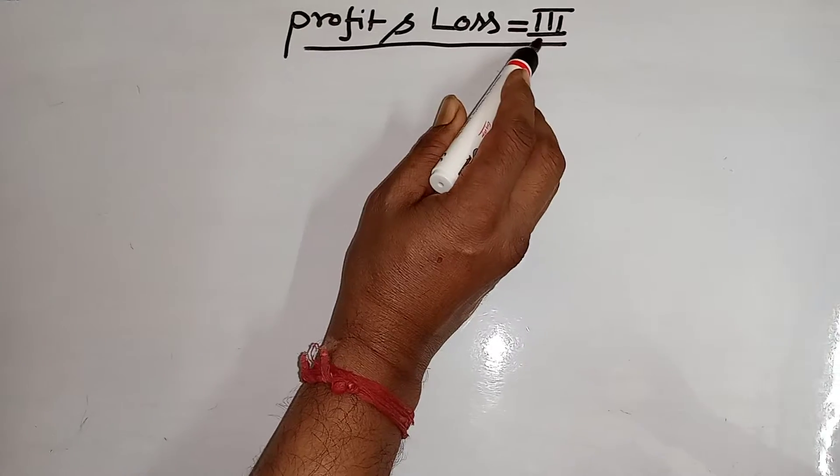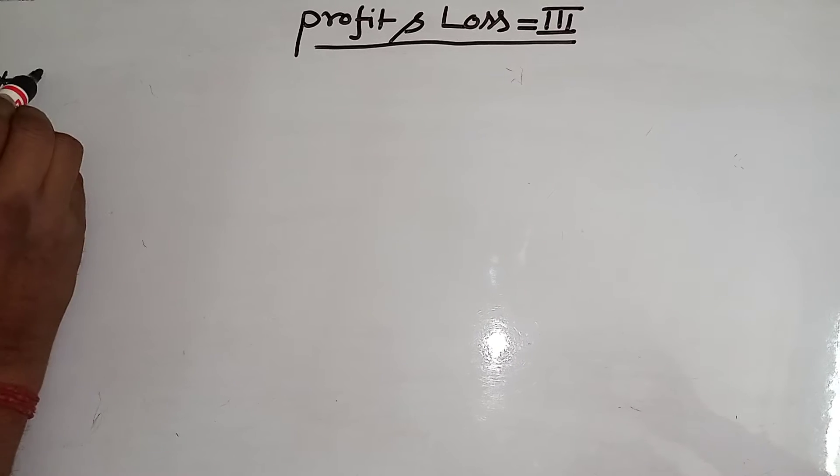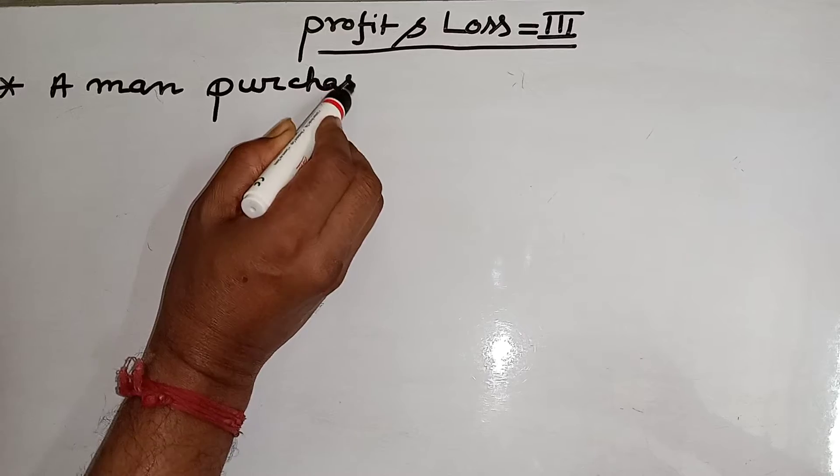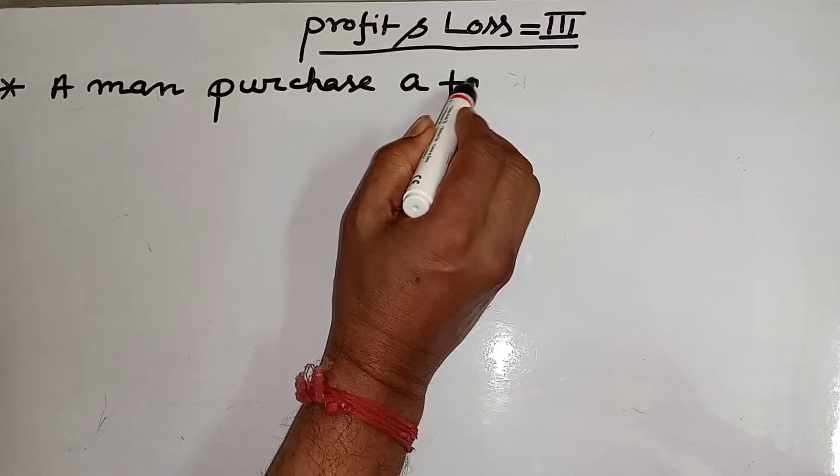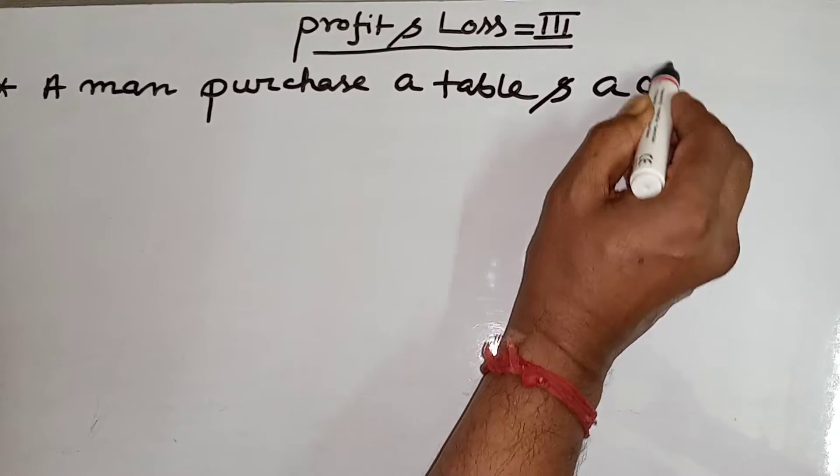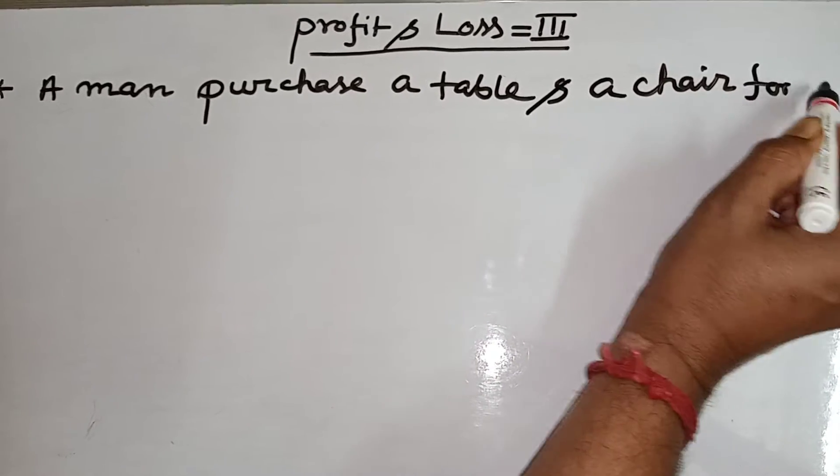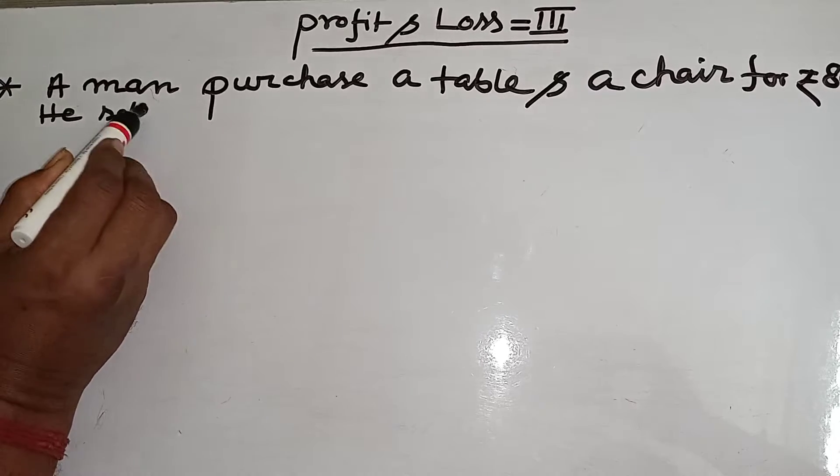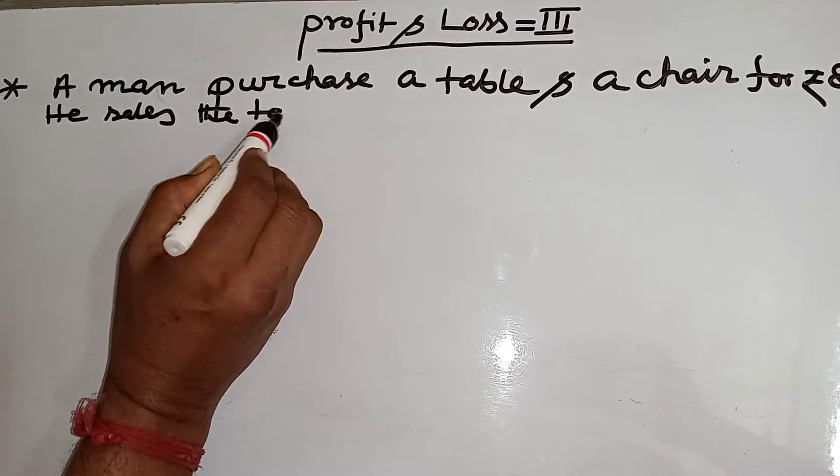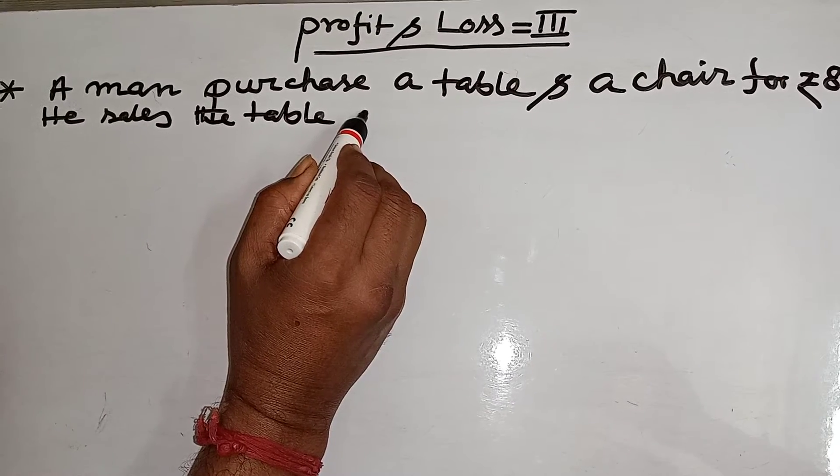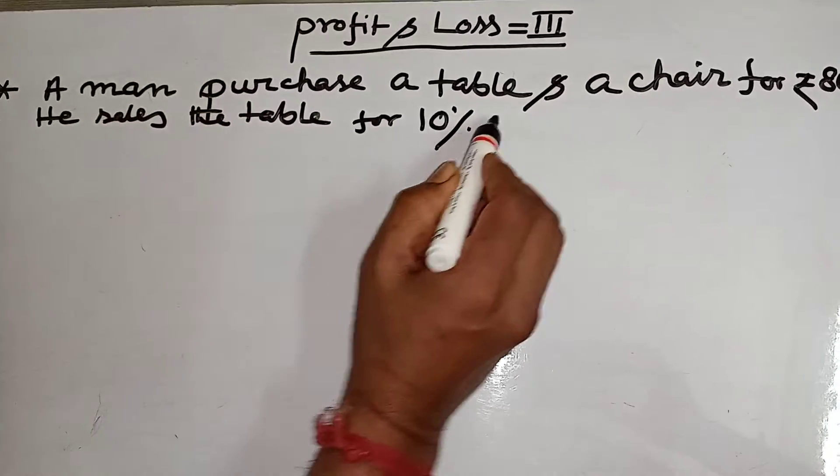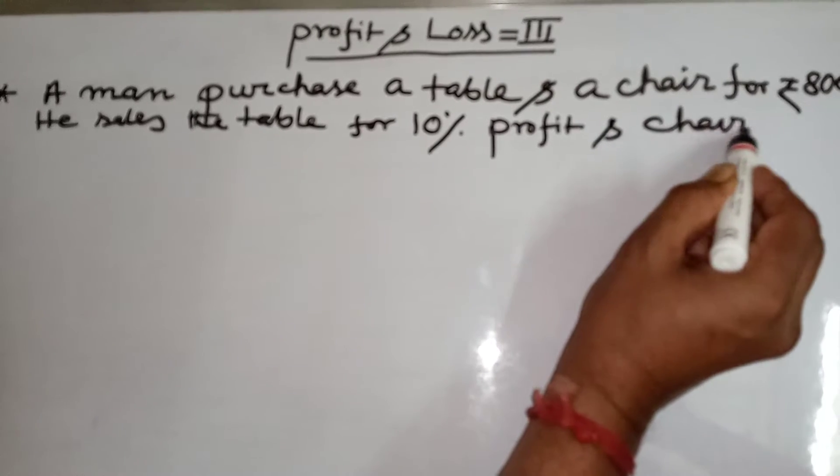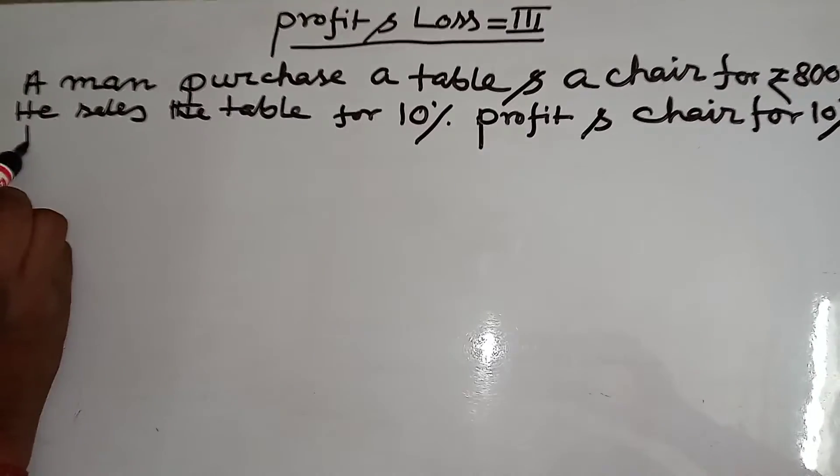Profit and loss part 3. A man purchases a table and a chair for rupees 800. He sells the table for 10% profit and chair for 10% loss.